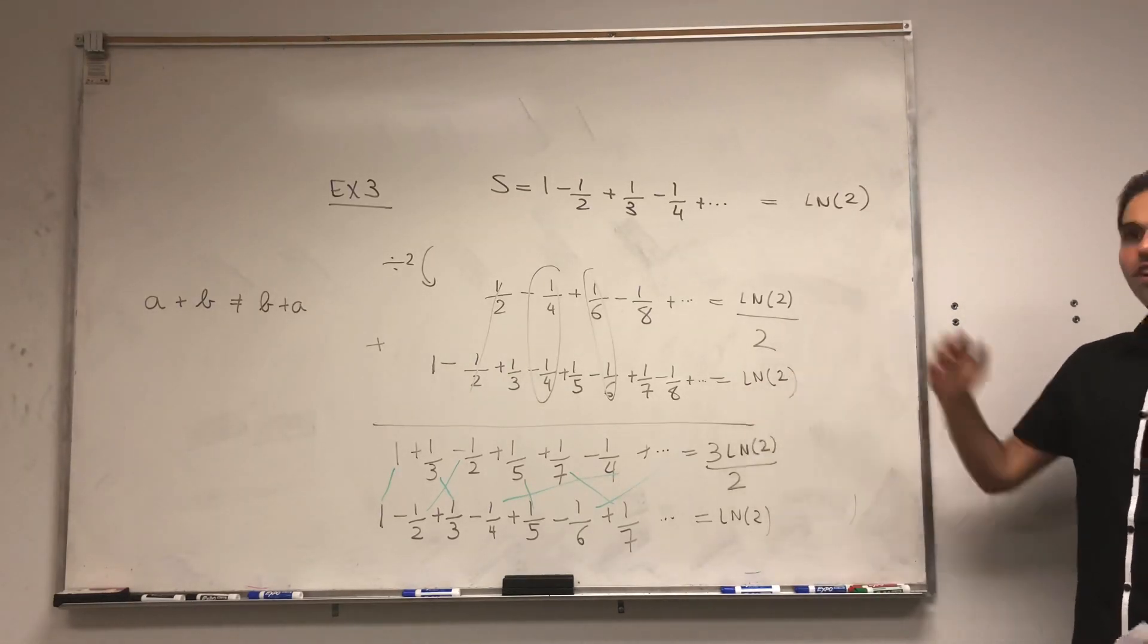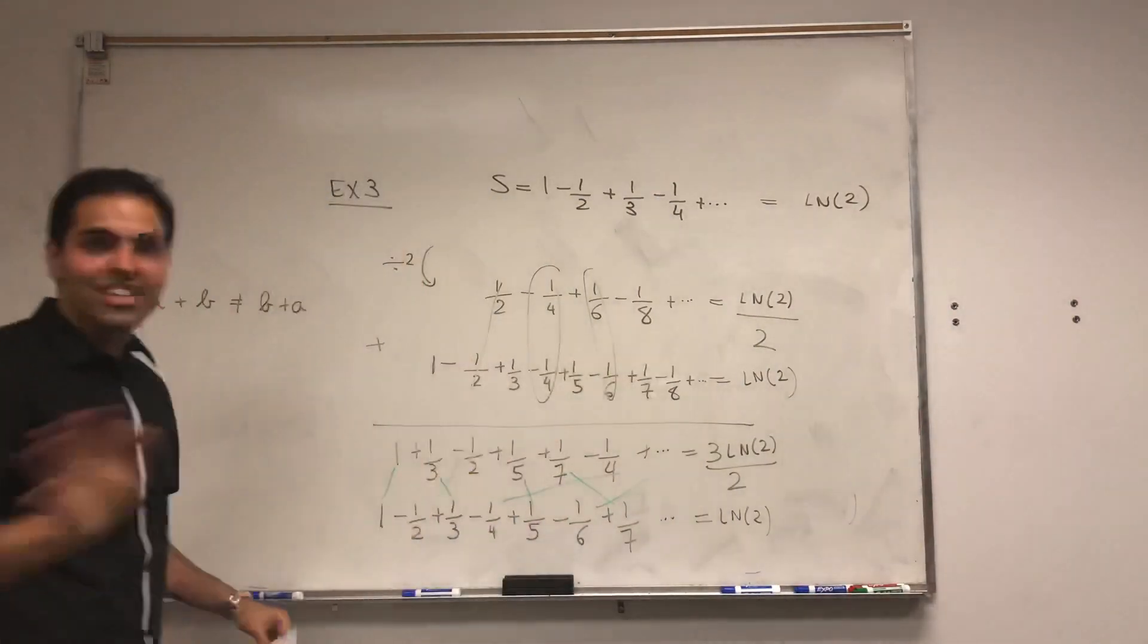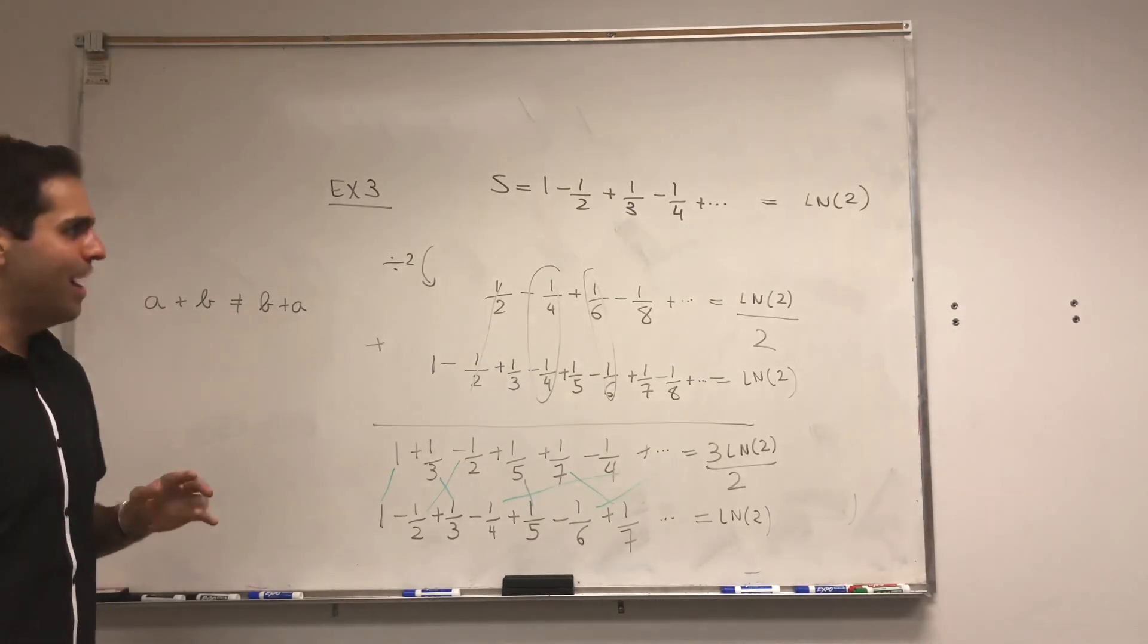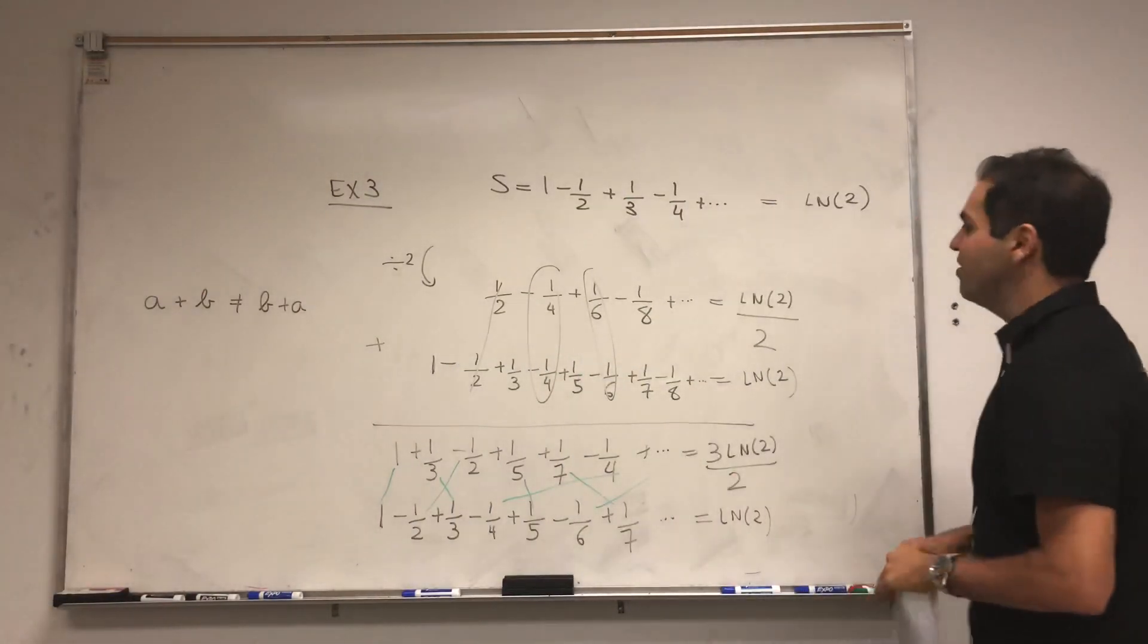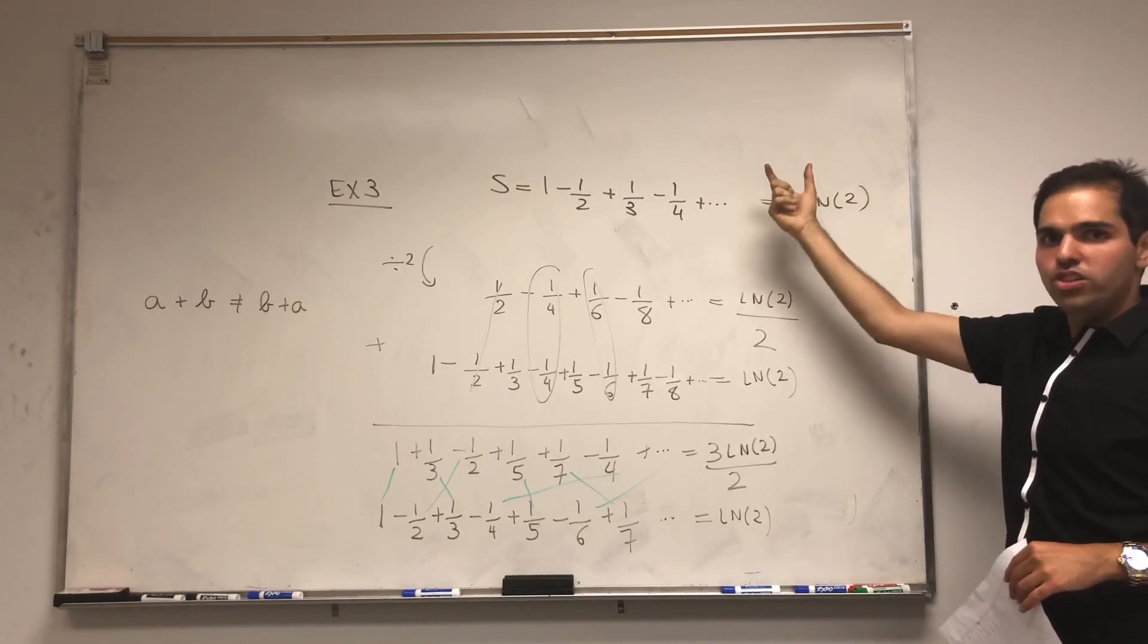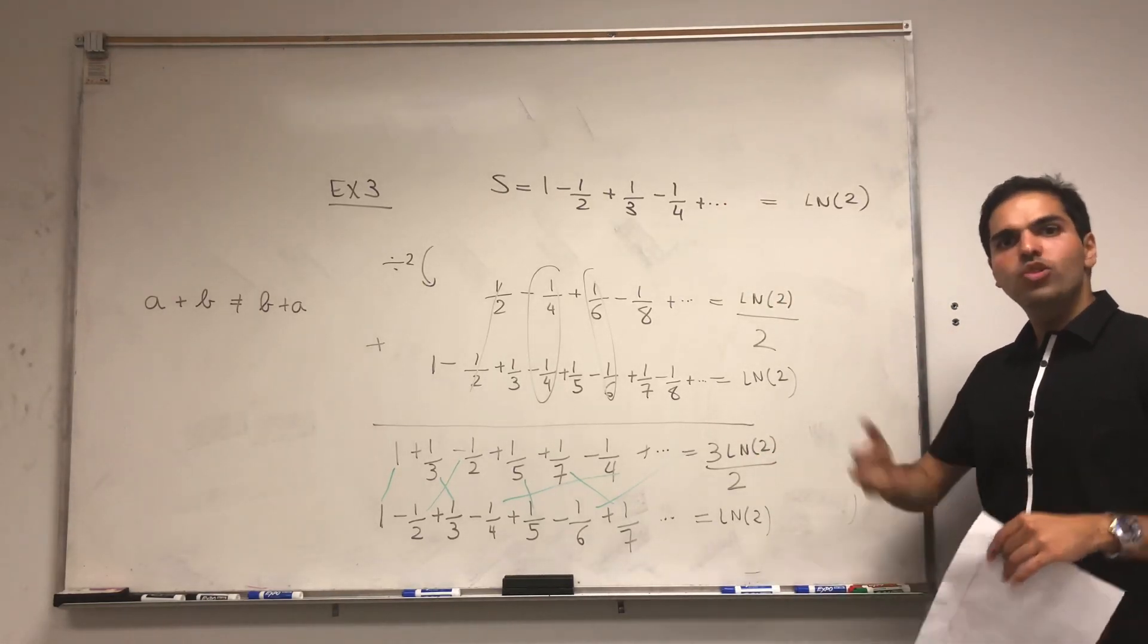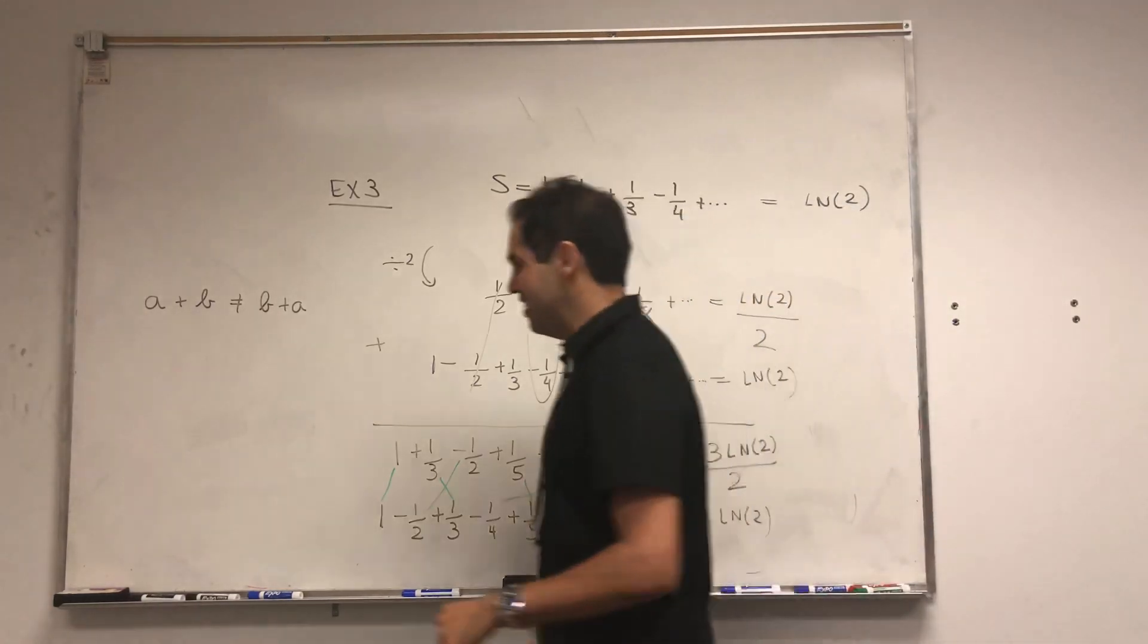We started with ln of 2, and we got 3 halves ln of 2. And this is very legitimate. It's not evil magic or anything. But not only that, here's a cool fact. There was nothing special of 3 half ln of 2. With this series that is conditionally convergent, so convergent but not absolutely convergent, you can rearrange it any way you want to get any limit you want. Very crazy, but it is true.